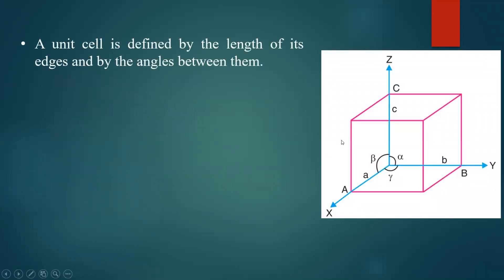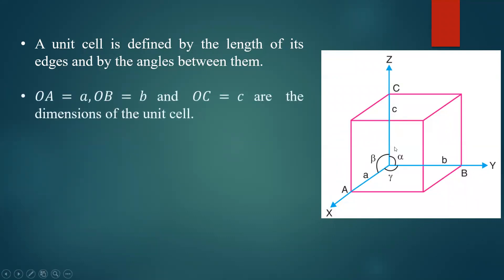The structure of a unit cell can be identified by its dimensions and interfacial angles. The unit cell is defined by edge lengths a, b, c — where OA represents edge a, OB represents edge b, and OC represents edge c. A unit cell may have a parallelepiped structure, and its dimensions are defined by the length, breadth, and height: a, b, c respectively.